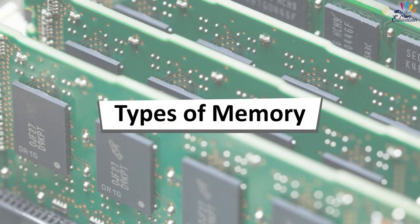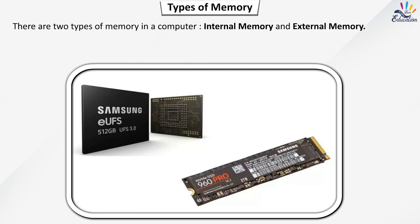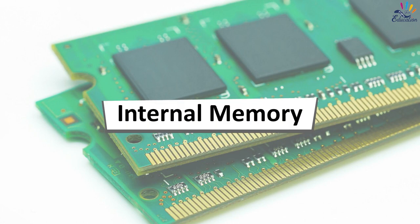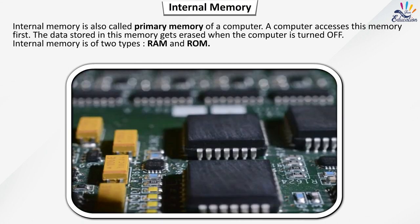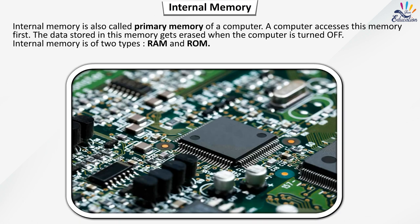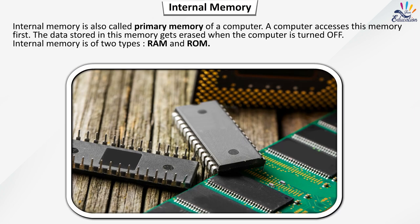There are two types of memories in a computer: internal memory and external memory. Internal memory is also called primary memory of a computer. A computer accesses this memory first. The data stored in this memory gets erased when the computer is turned off. Internal memory is of two types: RAM and ROM.